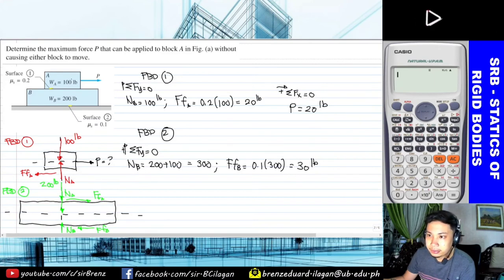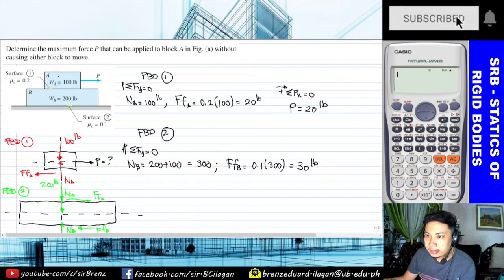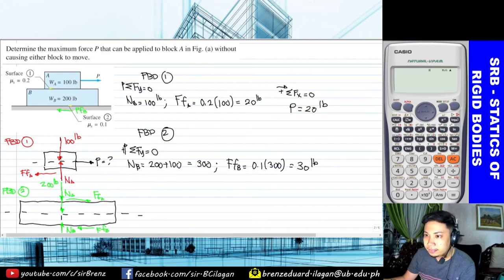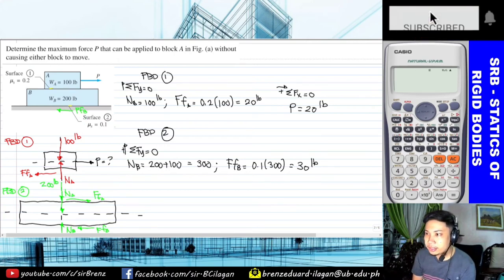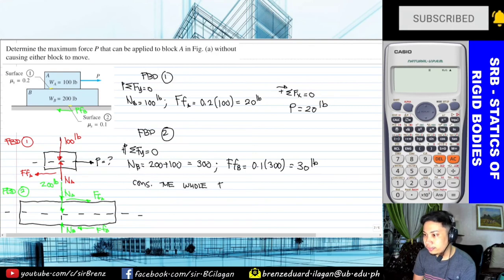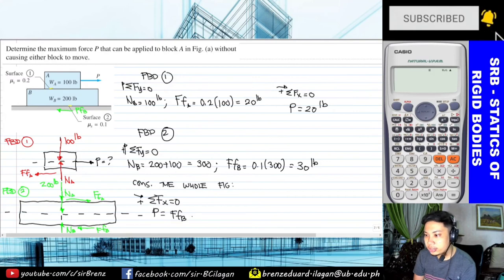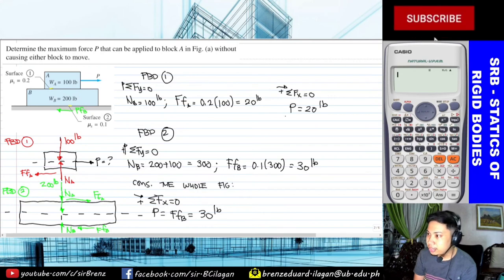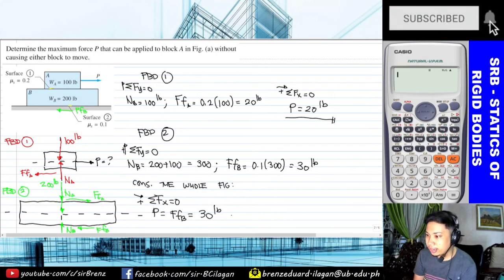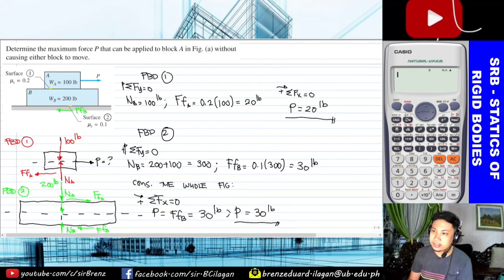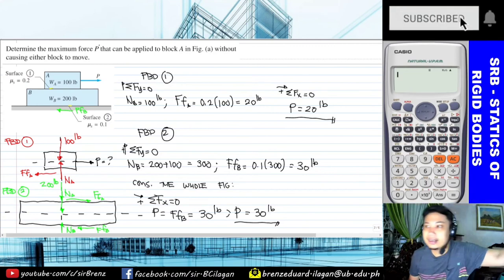By considering the whole system — the entire figure as one — the frictional force at the bottom surface B acts at the base. Taking summation of forces in X equals zero, considering to the right as positive, P equals frictional force of surface B, which gives us 30 pounds. So we have two values of P: 20 pounds and 30 pounds. Between these two, which is the correct answer? The problem asks for the maximum force P.